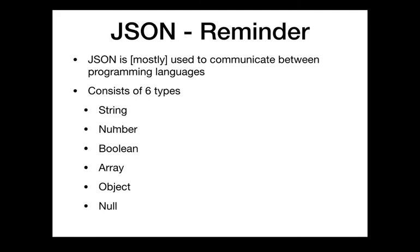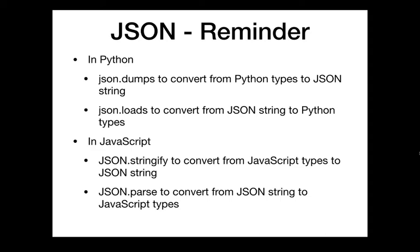JSON is very elegant in that it can represent very complex pieces of data with just six types: strings, numbers (either integer or floating point), booleans, arrays (any list of values), objects (which are key-value pairs — that naming comes from JavaScript), and null to represent no value. In Python and JavaScript, working with JSON fits on one slide.